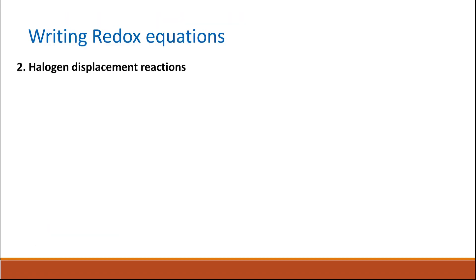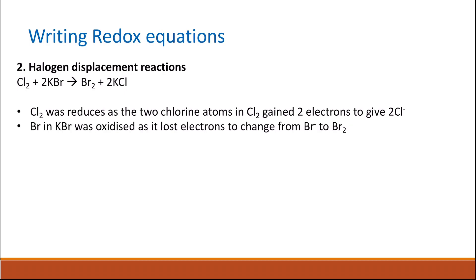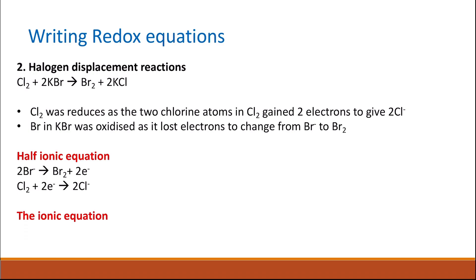Another example is the halogen displacement reaction. The more reactive halogens displace the less reactive ones from their salts. Going down group seven, reactivity decreases, so chlorine is more reactive than bromine and can displace bromine from its salt. For example, chlorine with potassium bromide gives bromine and potassium chloride. Chlorine was reduced — gaining two electrons to give two chloride ions — while bromide was oxidized, losing two electrons to give bromine.